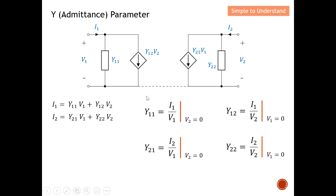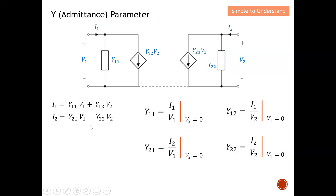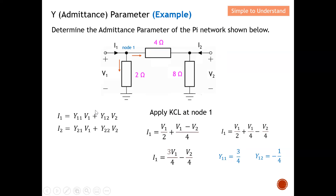Now let me work through an example so you can fully understand Y or admittance parameters. The task is to determine the Y or admittance parameters of a pi-network. There are multiple ways to find Y parameters — for instance, you could find the Z parameters first and then invert them, as done in the previous video.